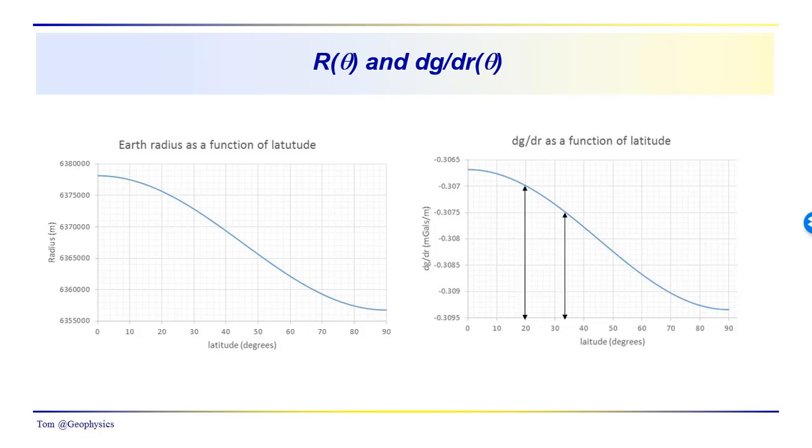And you can see here where at 20 degrees north or south latitude, we have a dg/dr of about minus 0.307, at about 33 degrees minus 0.3075 mgals per meter.